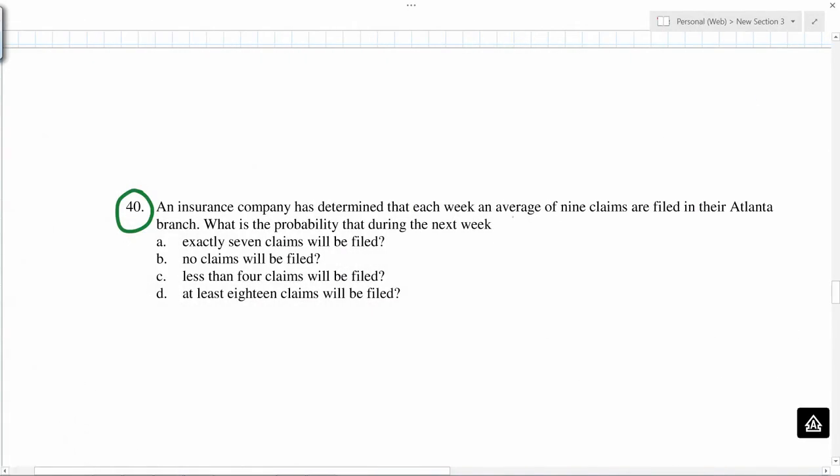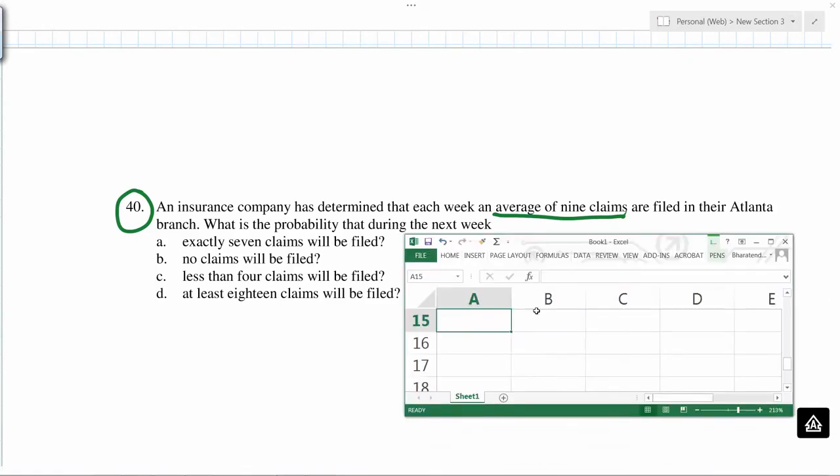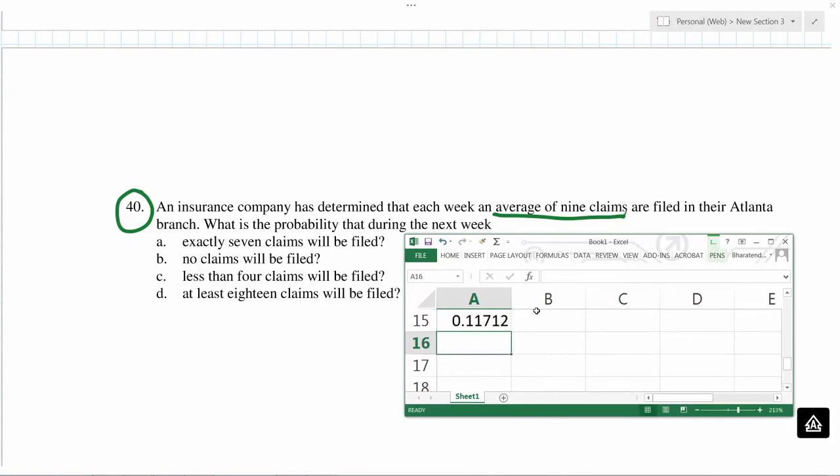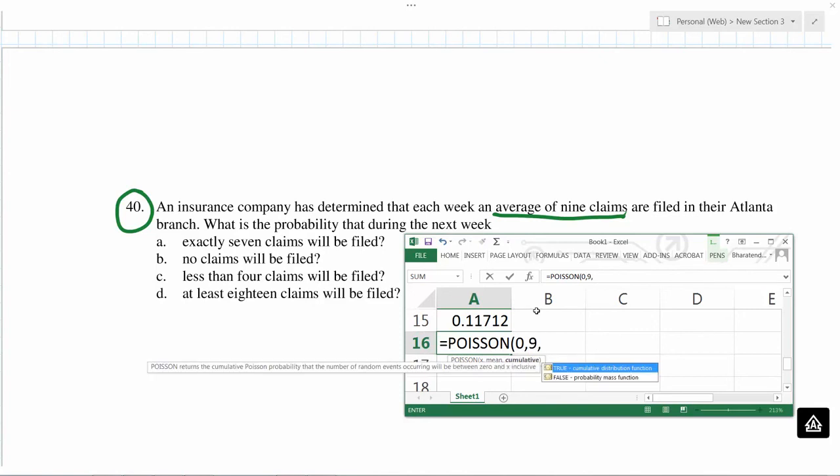Average of 9 claims. What is the probability of exactly 7 claims? Exactly 7 claims, so equals Poisson. 7 claims, average is 9, and because it is exactly 7, we say false. Similarly, no claims, equals Poisson, no claims, average is 9, and false.